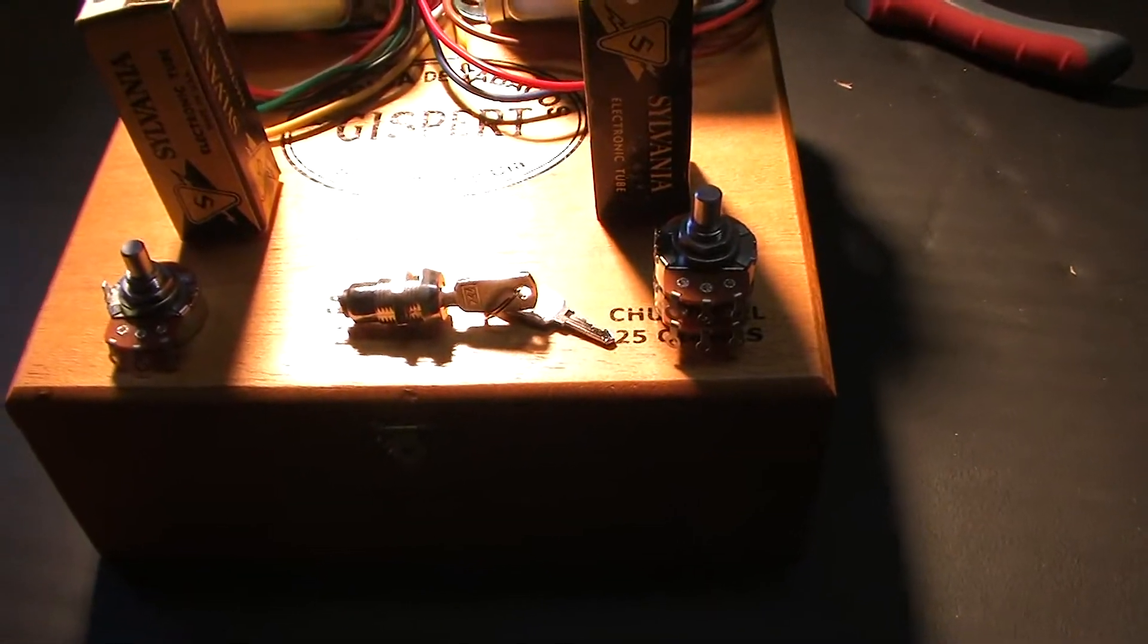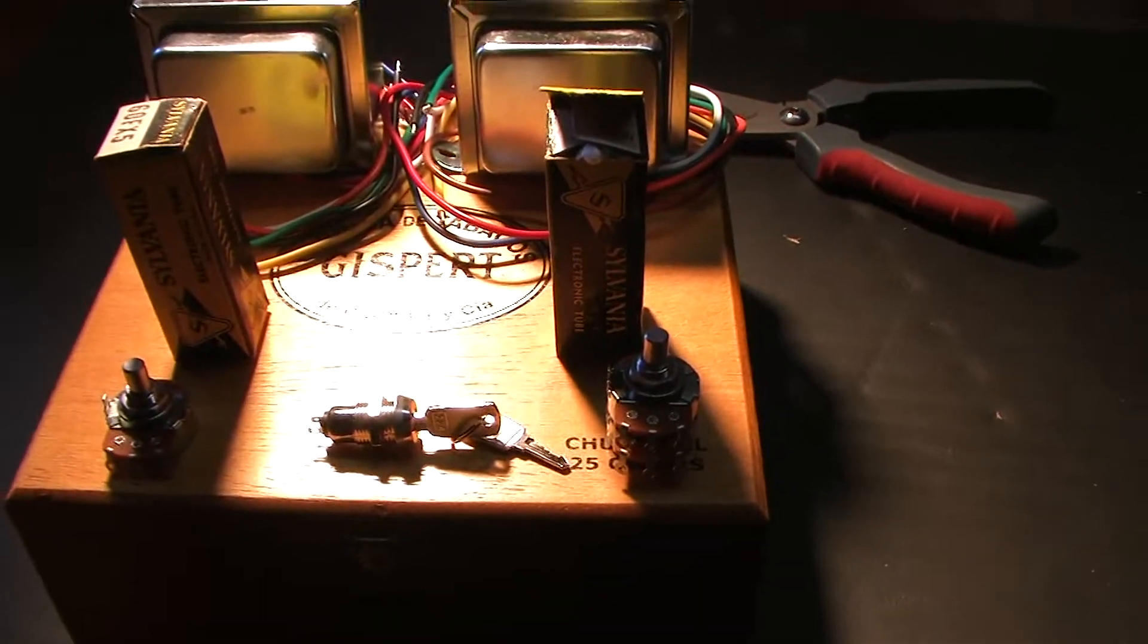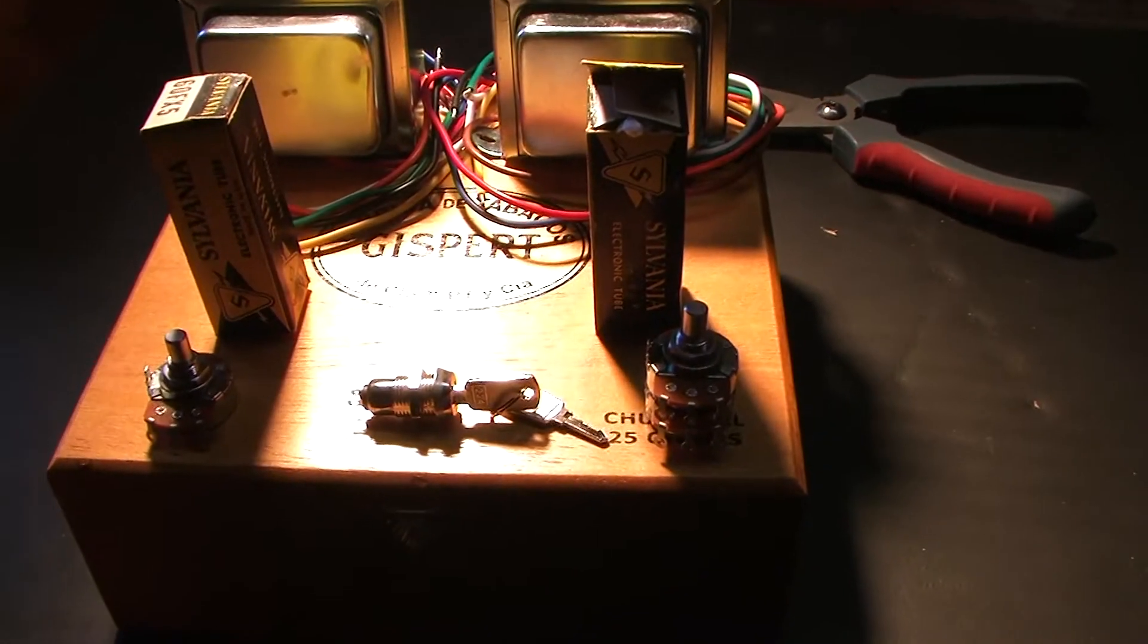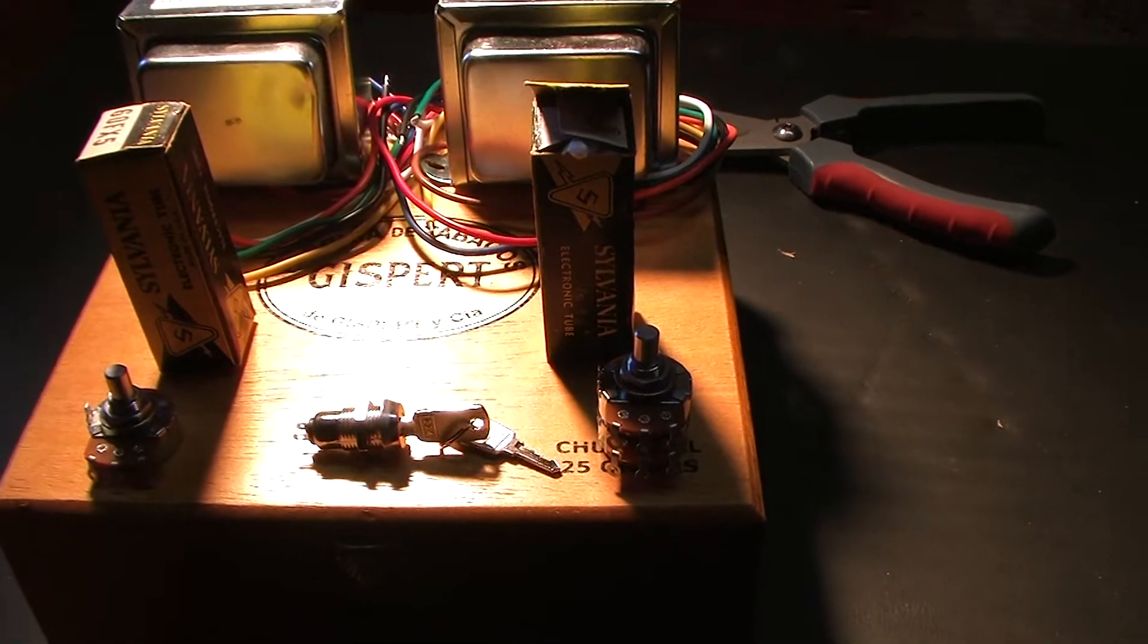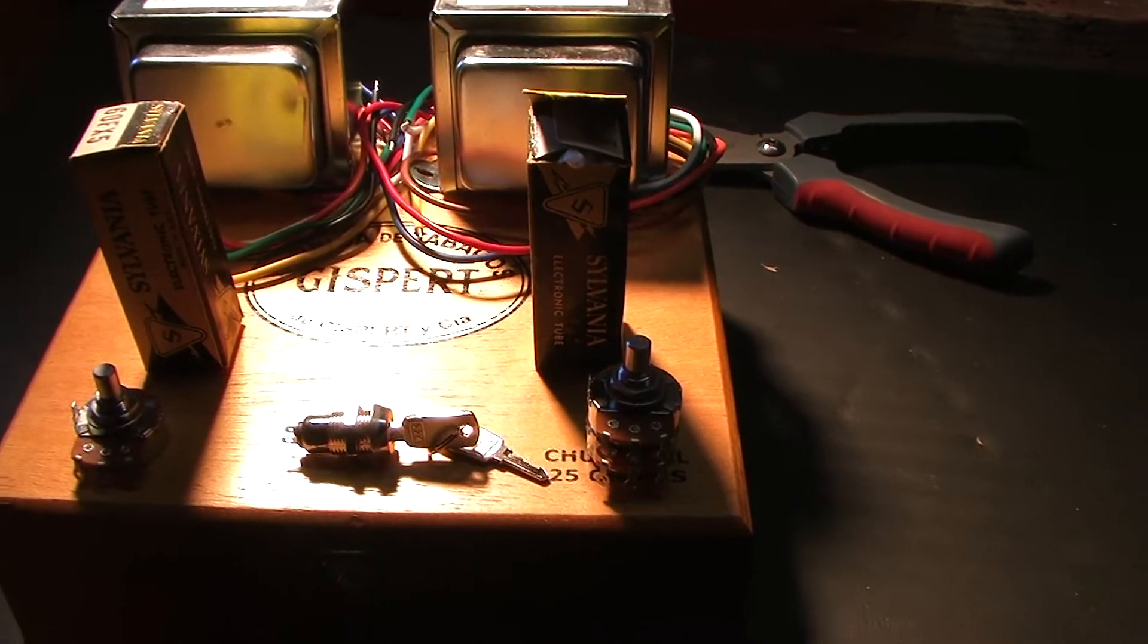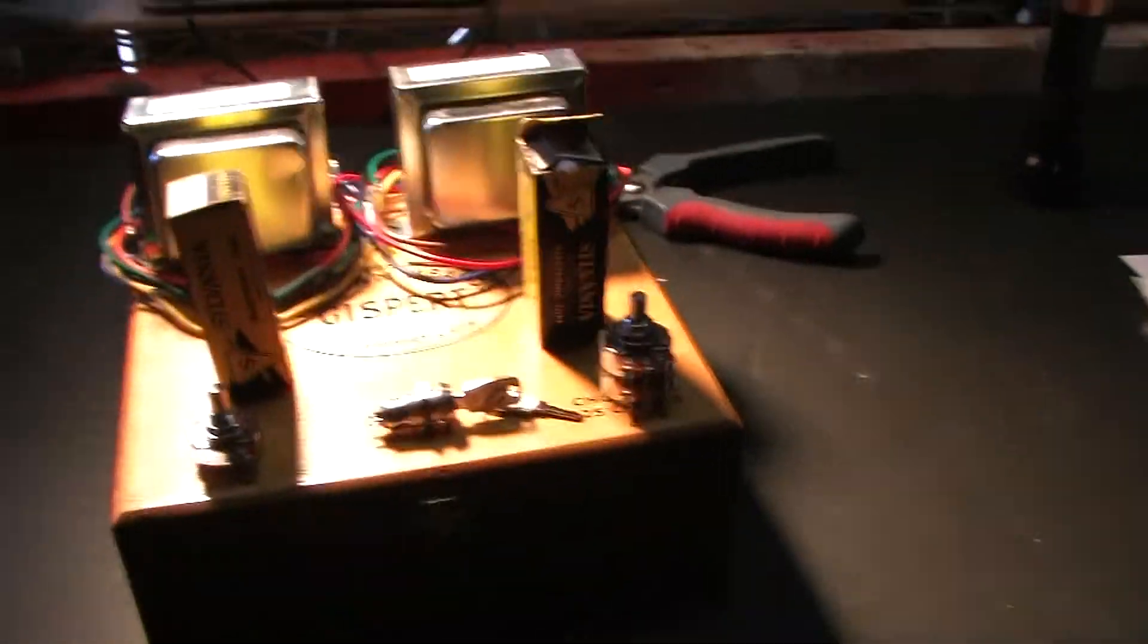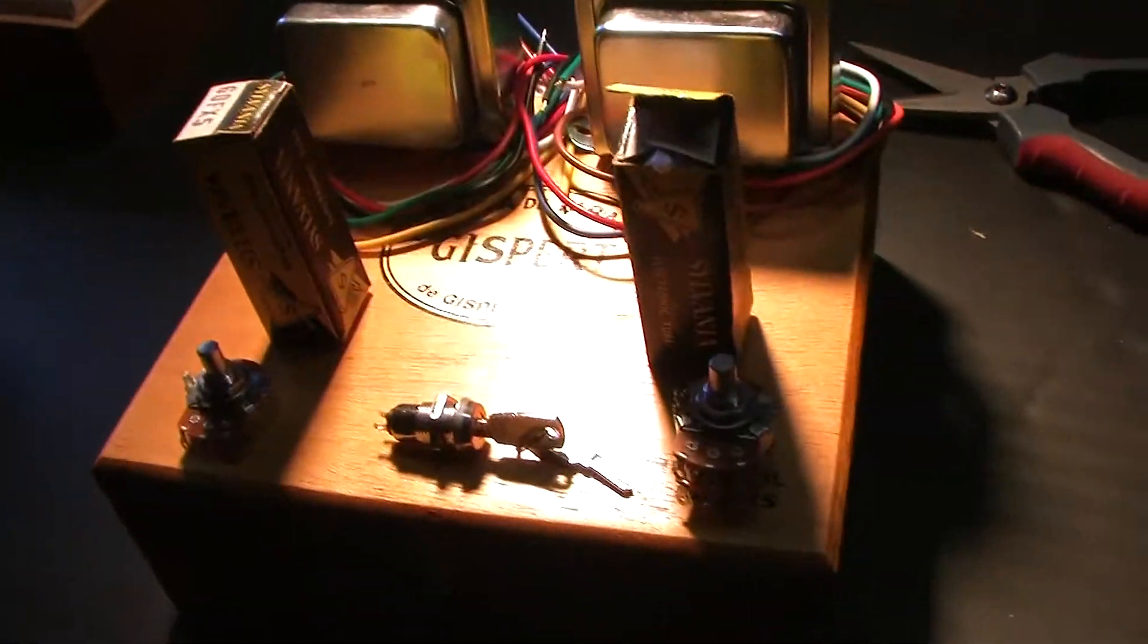And of course the input jacks and the power would come in on the back side. And there's no pilot light on this thing because I never saw a need for an on light for a tube amplifier because generally you see the tubes glowing and you know the thing is on. Sometimes lights look kind of neat though.